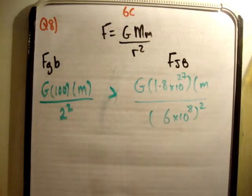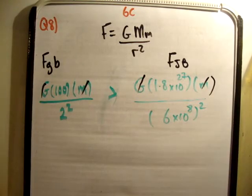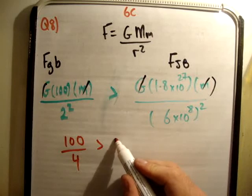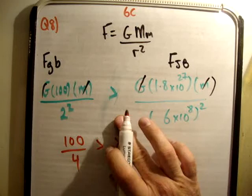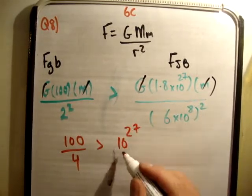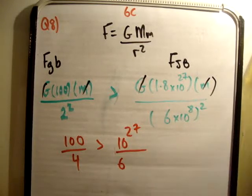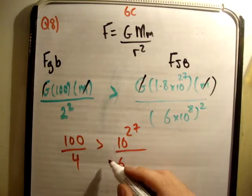And let's look at the numbers here without even doing a bit of real maths. So let's just get rid of the common things. So gravity, mass of the baby, gravity, mass of the baby. So essentially what he's saying is that 100 over 4 is greater than 10 to the 27 divided by 6 times 10 to the, let's just square that all together, 3.6 times 10 to the 17.